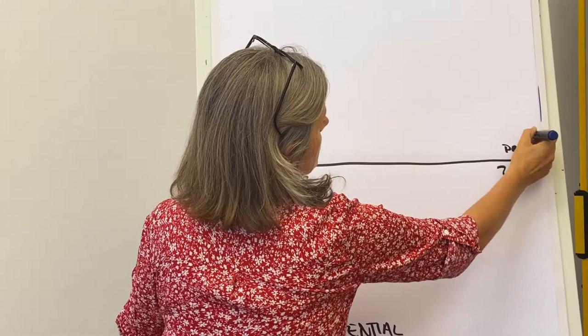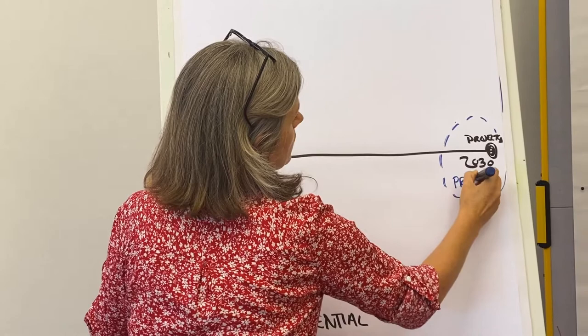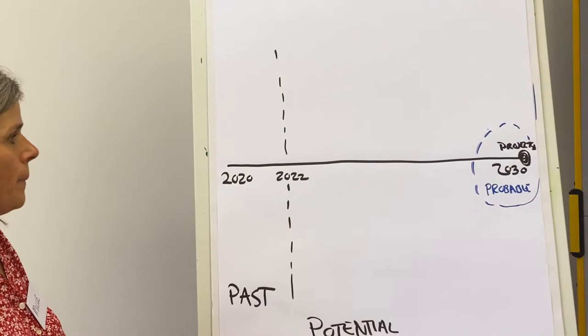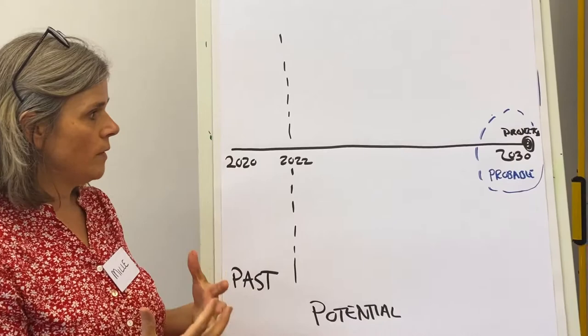So beyond the projected space, there's a larger space, that's the space of the probable. So what is likely to happen? What do we think will happen?